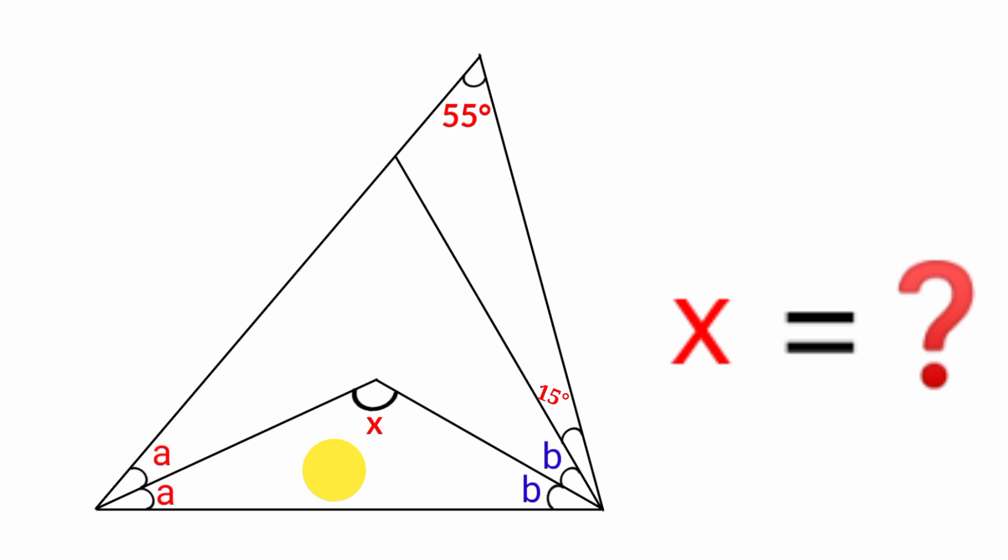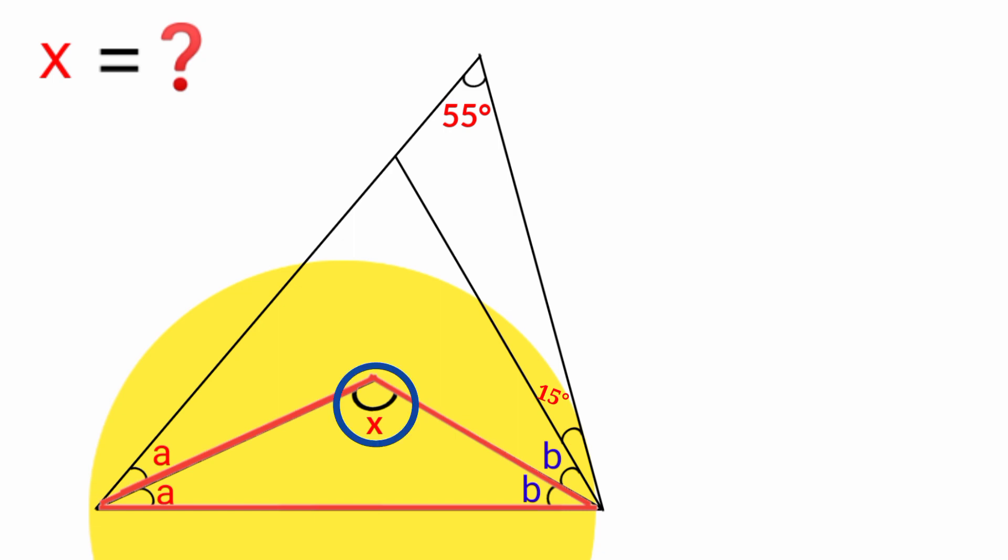Similarly, these angles here are also congruent. Now if you look at this triangle here, we have its angles to be x, a, and b. The summation of angles in a triangle is 180 degrees. We all know this. That is, if we subtract a and b from 180 degrees, we're going to be left with x.